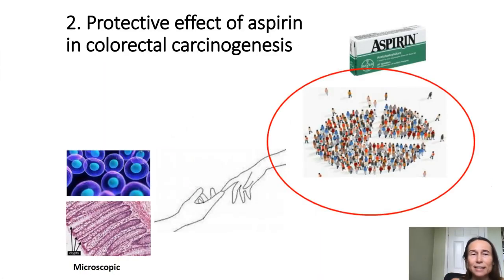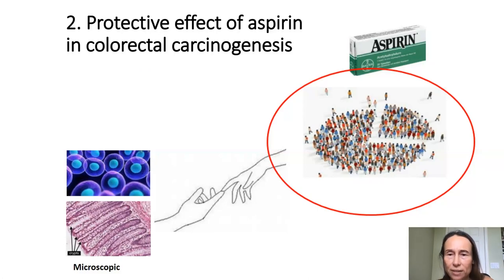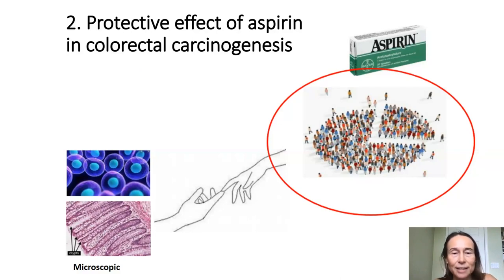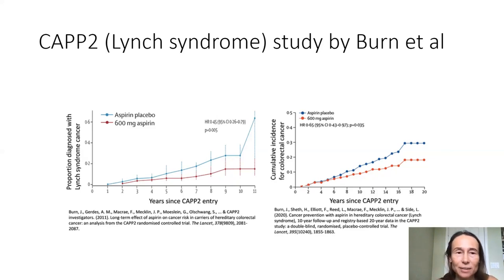In the second part of my talk, I want to connect this microscopic modeling with the bigger picture of cancer epidemiology, and specifically discuss the role of aspirin as a possible means to protect against cancer. I will start with some experimental epidemiological evidence.